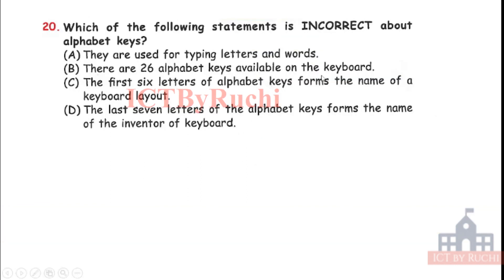Last question. Which of the following statement is incorrect about the alphabet keys? They are used for typing letter in sounds. There are 26 alphabet keys available in the keyboard. The first 26 letters of alphabet keys form the name of a keyboard layout. The last 7 letters of the alphabet keys form the name of the inventor of the keyboard. Tell me the answer which is incorrect, which is wrong. Answer is D. The last 7 letters of the alphabet keys form the name of the inventor of the keyboard is false.